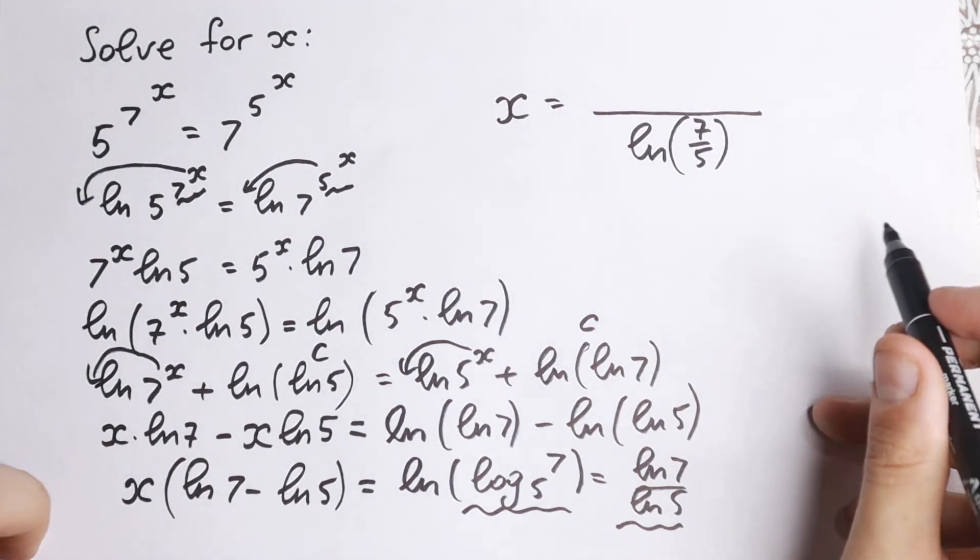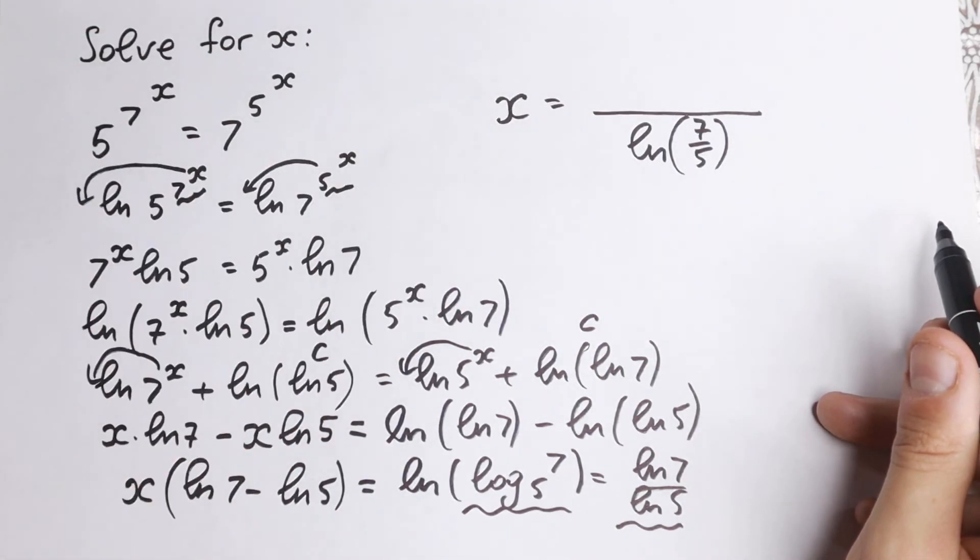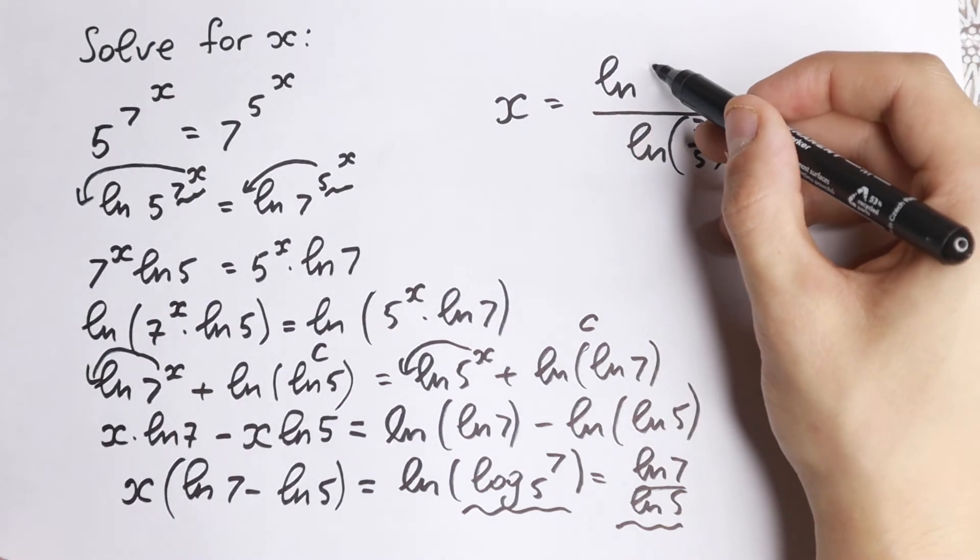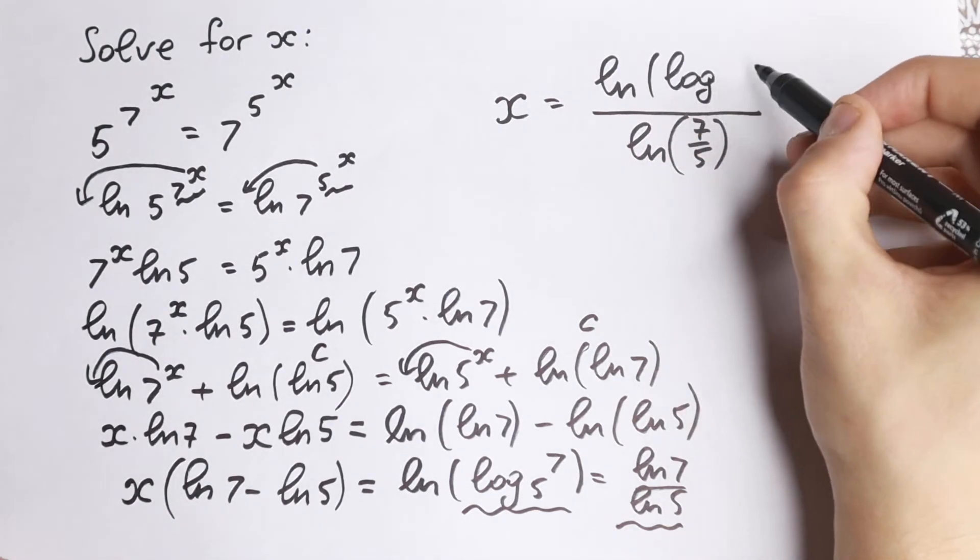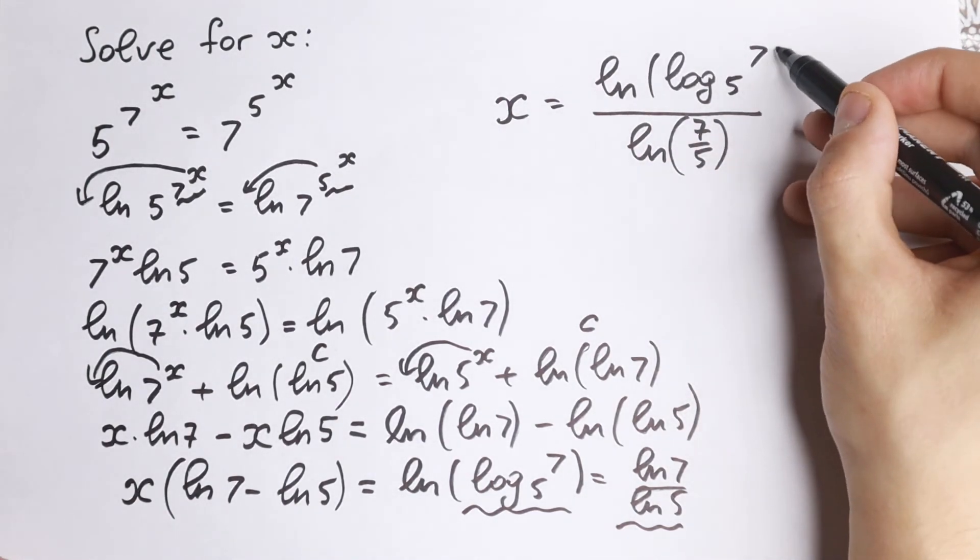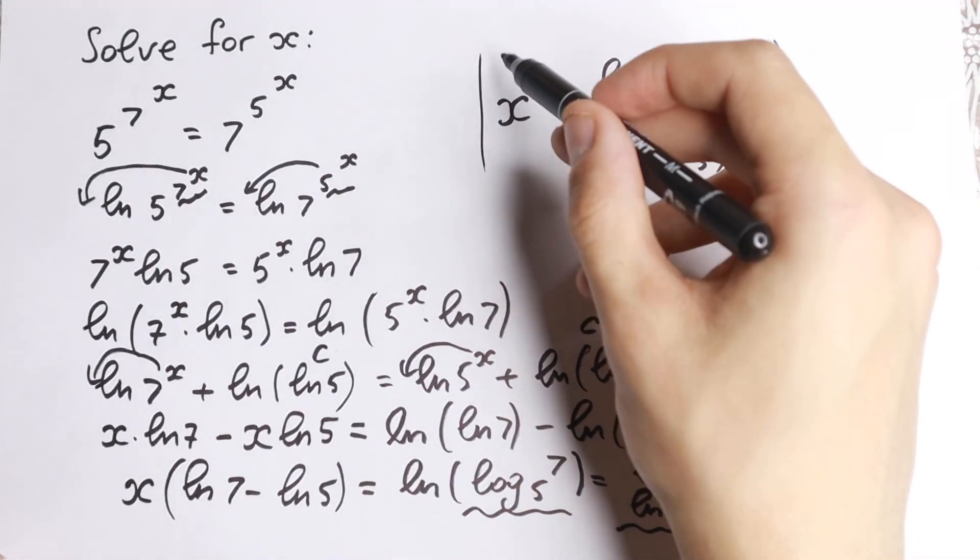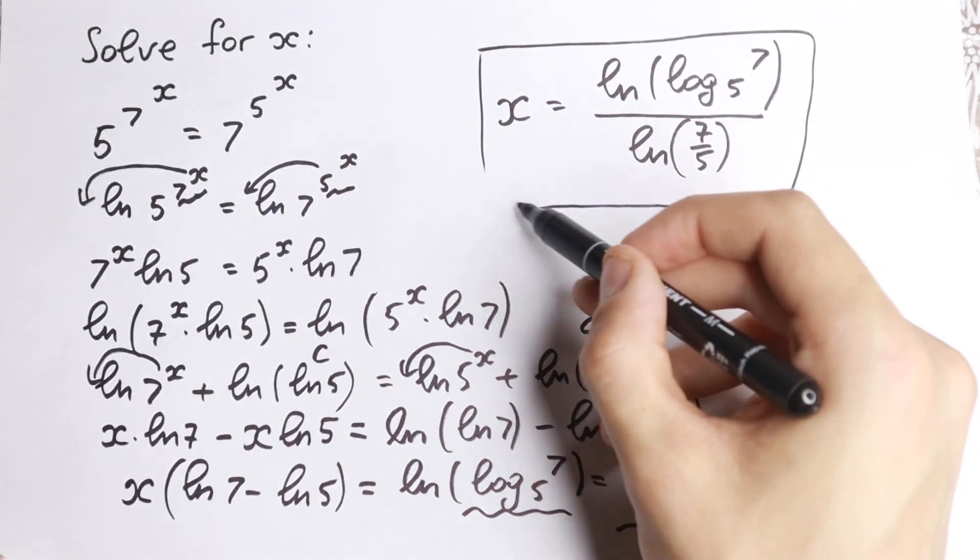Because we have a subtraction, so we can write it as division. And in our denominator, we can write it as natural log of log 7 base of 5. This is our answer. A little bit complicated answer, as you can see. There is no log integers.